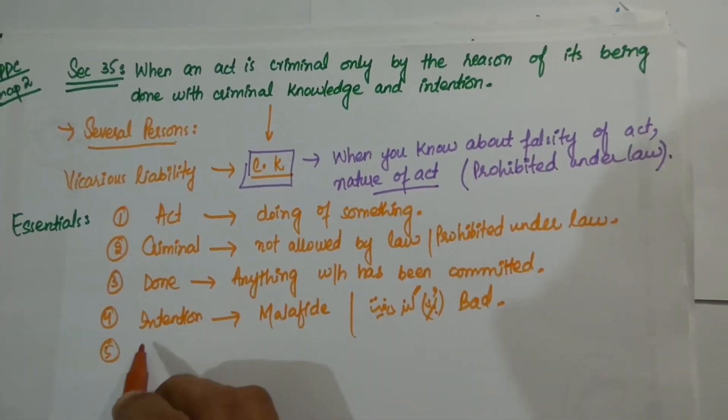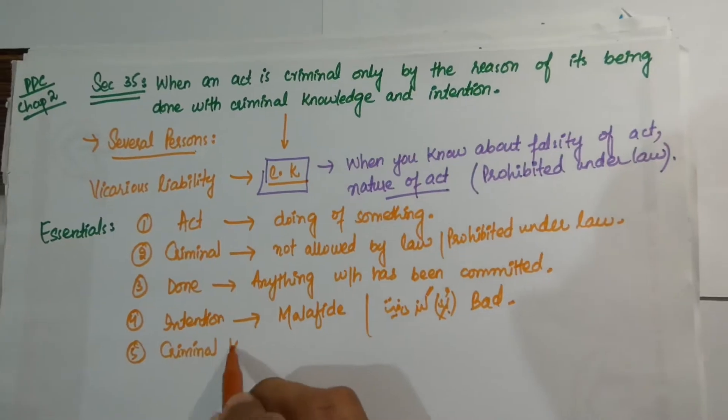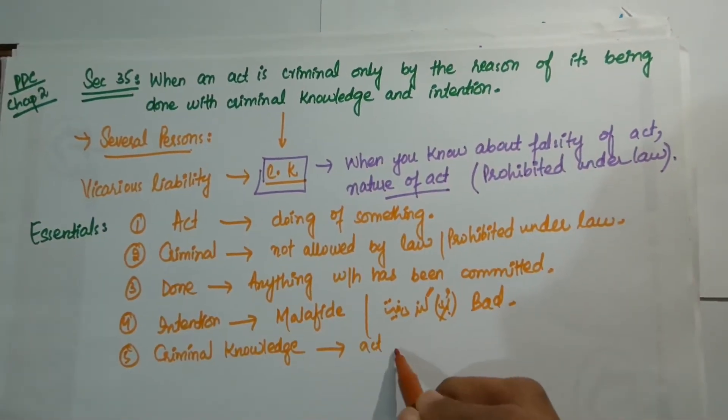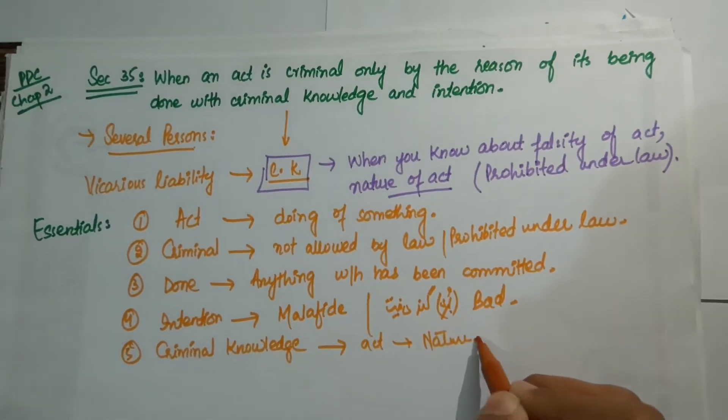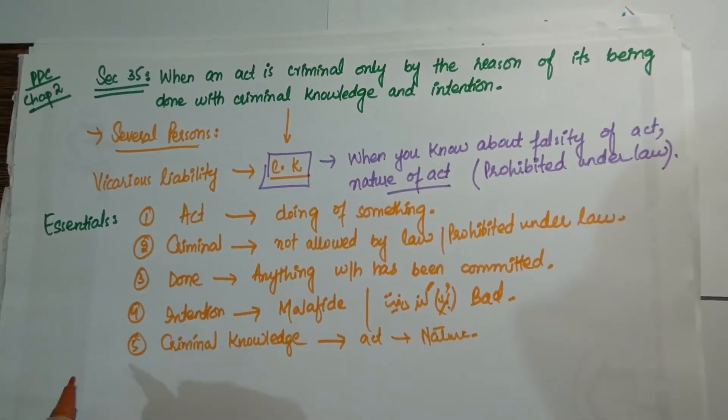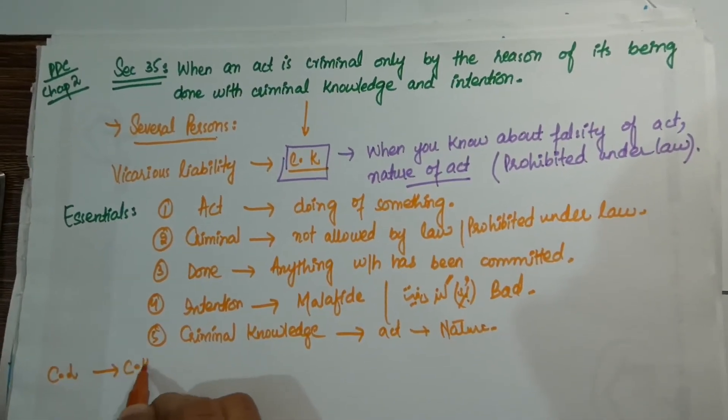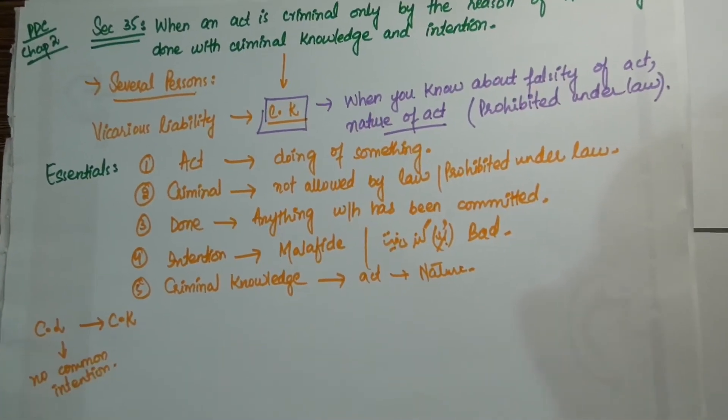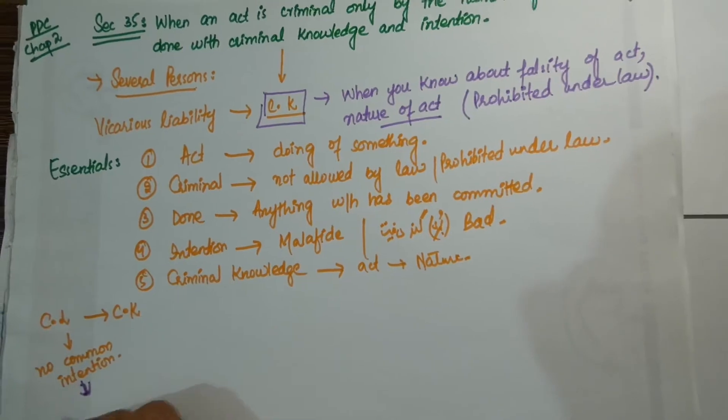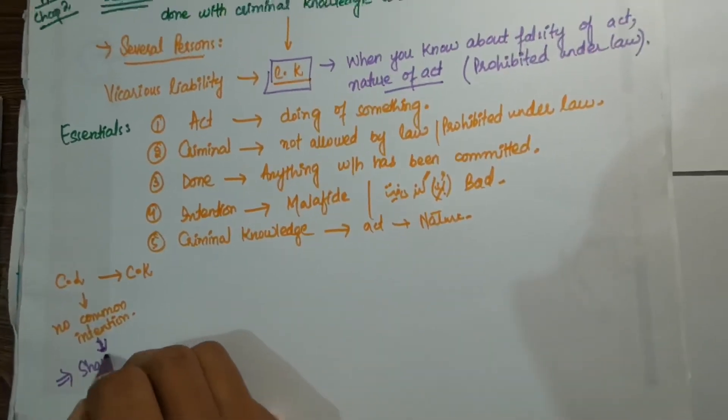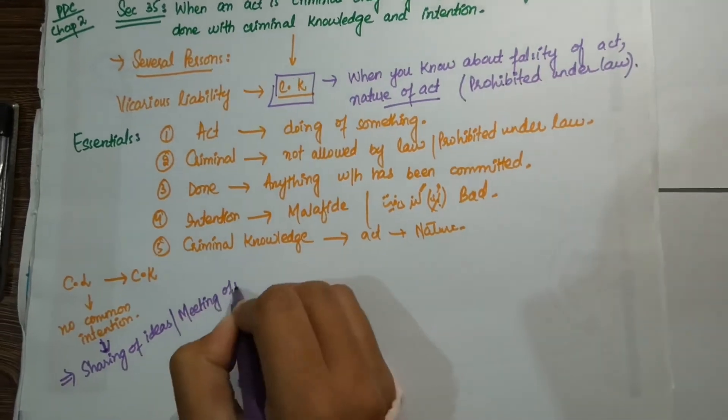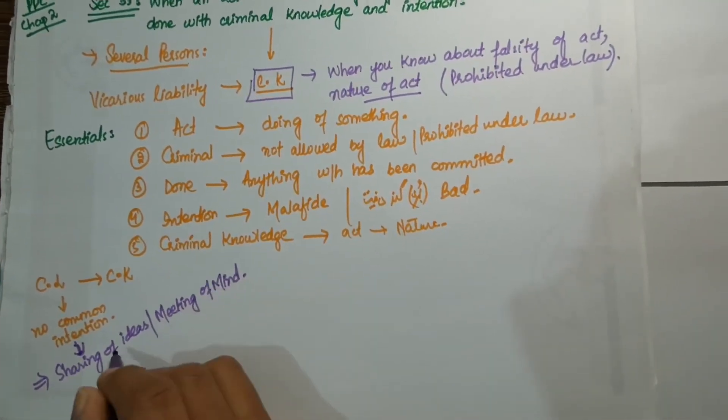Number five is criminal knowledge. Criminal knowledge simply means when a person who is committing that act knows about the falsity of act, knows about the nature of act. Criminal liability arises on the person due to criminal knowledge. Here the person has no common intention. Common intention we already studied in Section 34, which basically deals with sharing of ideas, meeting of mind when there is a plan.